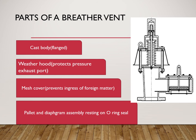The breather vent may be connected to the vent system, meaning other devices such as scrubbers can be connected. The pressure and vacuum sides of the valve have a pallet and diaphragm assembly resting on an o-ring seal to prevent leakage. The weight of the pallet pushes the diaphragm against a seat to keep it closed.